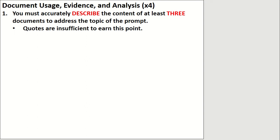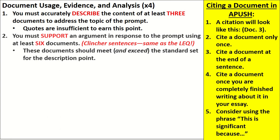When you use a document, you also want to make sure it's supporting an argument. You must support an argument in response to the prompt using at least six of the documents. Here's where your clincher sentences come into play. You want to use your evidence — whether it's SFI or a document — and make sure it's going and supporting your argument, not just randomly floating out there without being connected to some sort of argument. These documents should meet and exceed the standard set for the description point itself.